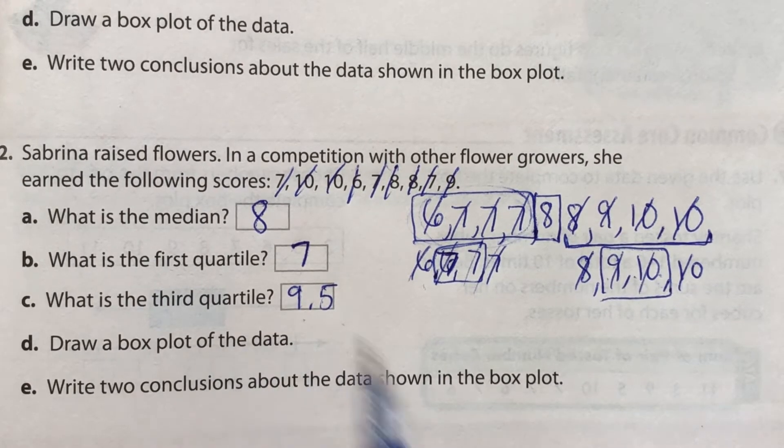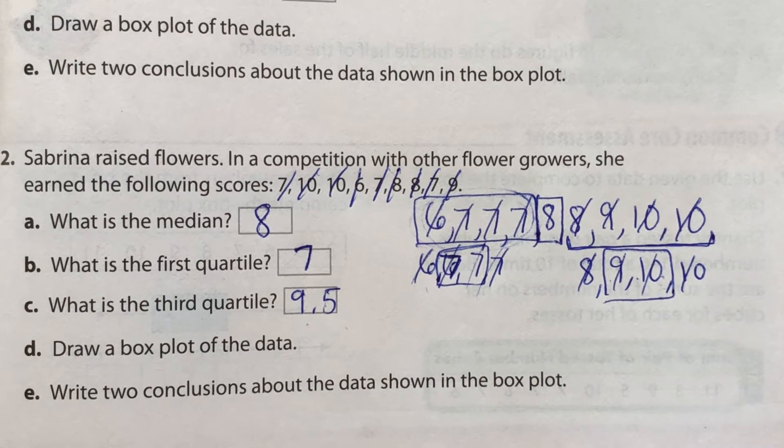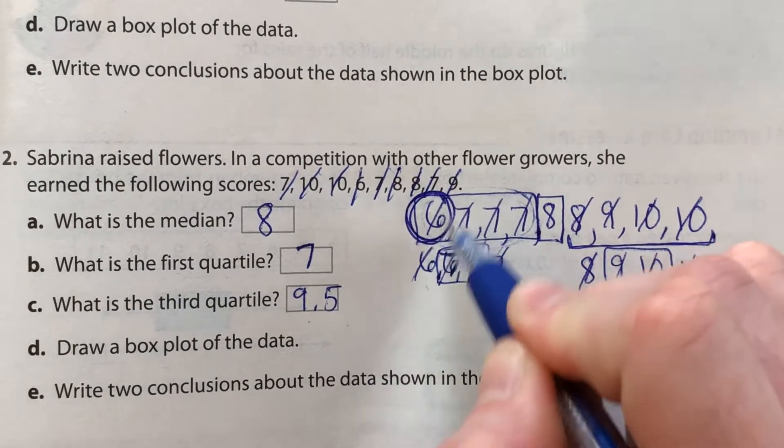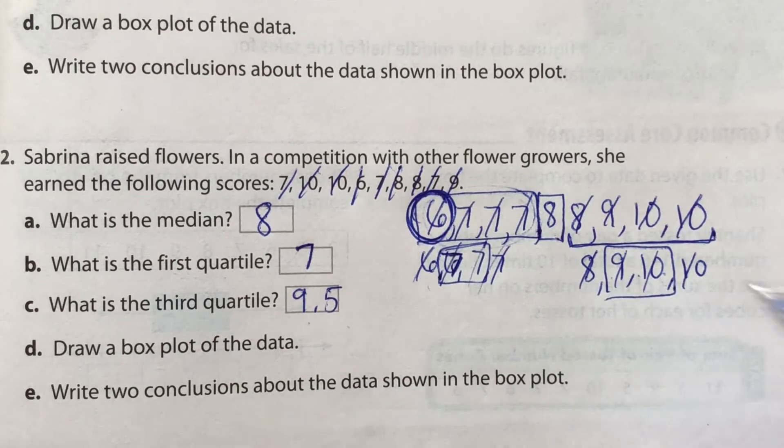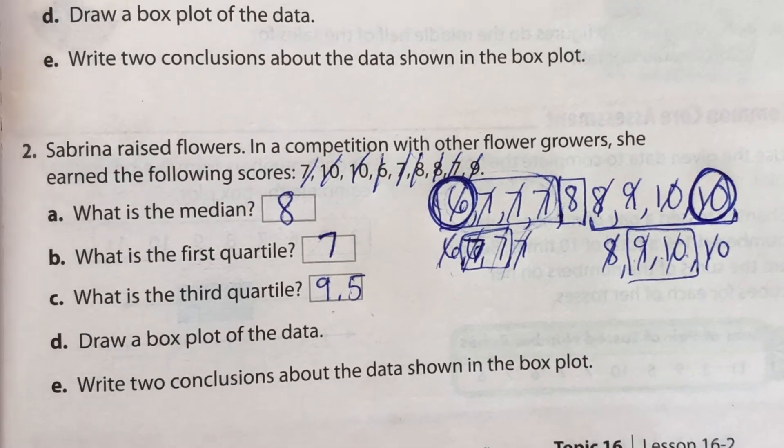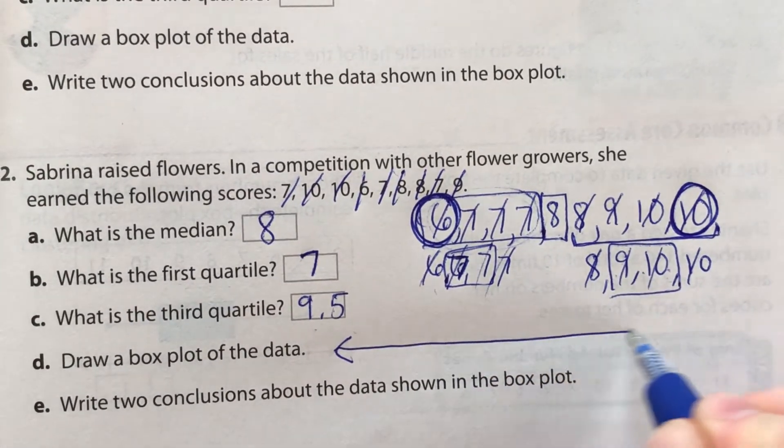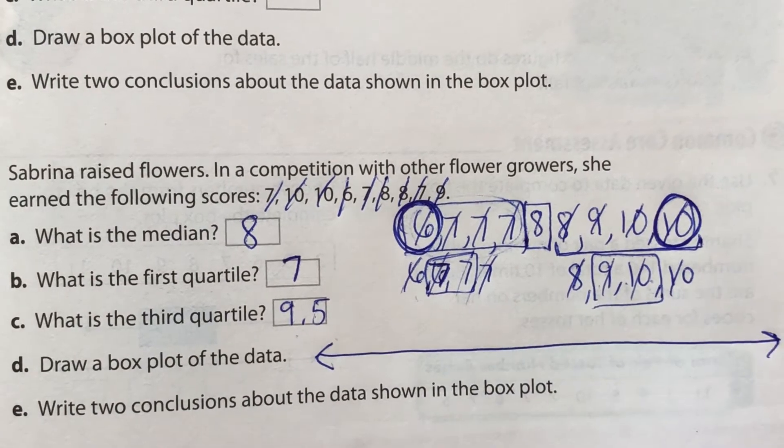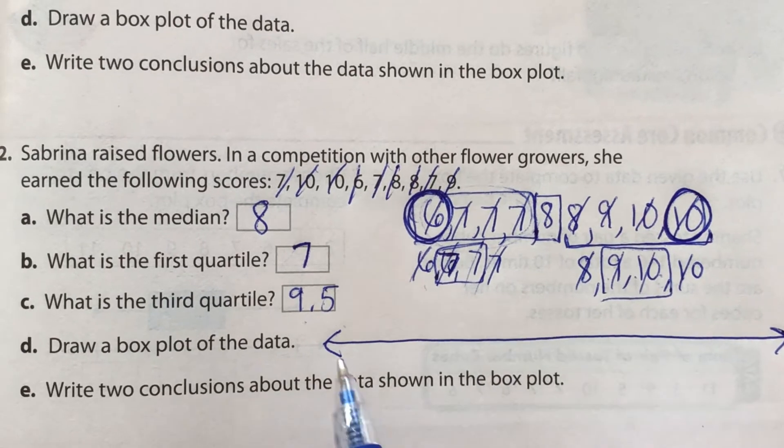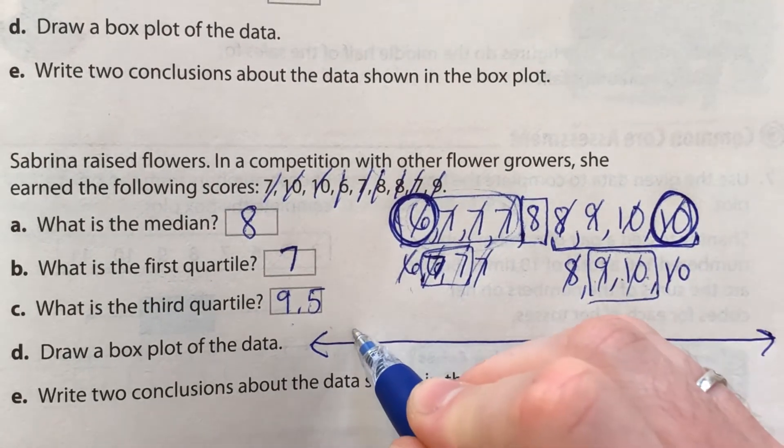Now we want to draw a box plot. In order to do that though, we also need to find the minimum and the maximum. So the minimum is six. That's the smallest number. The maximum is 10. That's the largest number. So now we're just going to draw a number line. And since our data just goes from six to 10, it's not very spread out. So we can just count on our number line by ones.